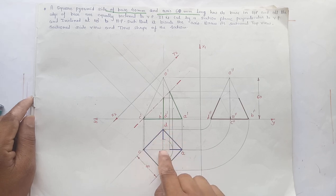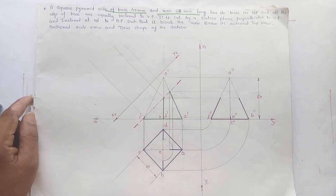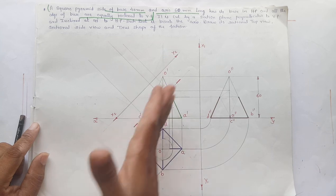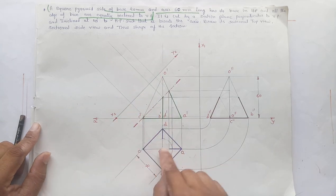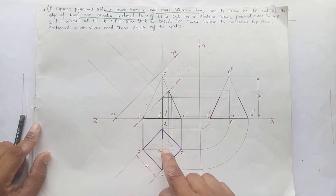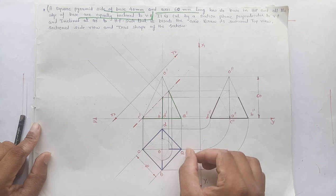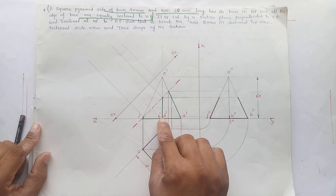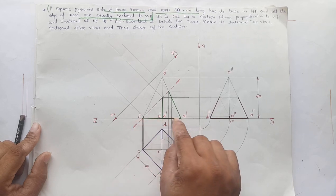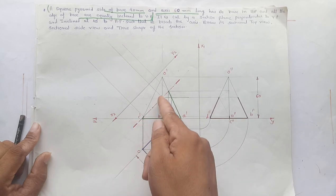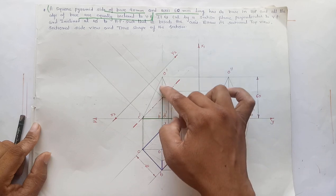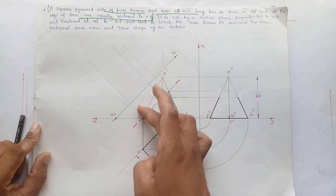Draw the plan ABCD with base edges equally inclined to the XY line. Show the center of the square to show the plan of the apex point, then join the apex point to the base corners to show the plan of the slant edges. Project the base corners onto the XY line as A', B', C', D' for the elevation of the base. The axis height of the pyramid is 60 mm, so measure 60 mm for the axis and join to base corners.